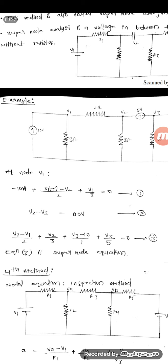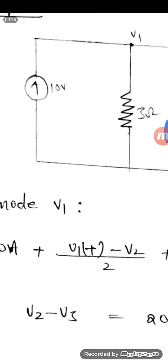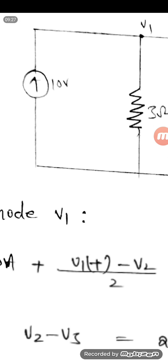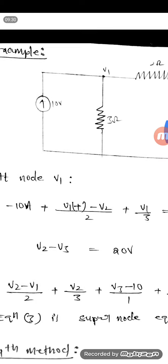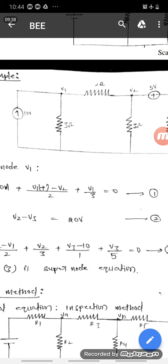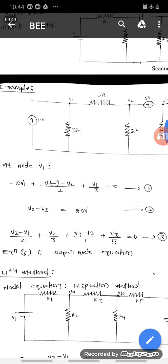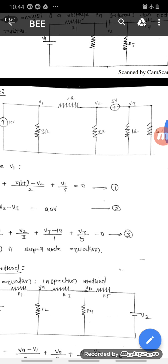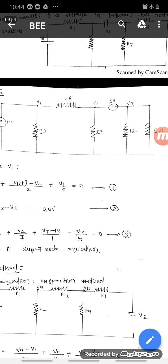All the currents are leaving from the node. The current source is directly given and it is directed towards node V1, that is why it is minus 10 amps. Then (V1 − V2) / 2 + V1 / 3.